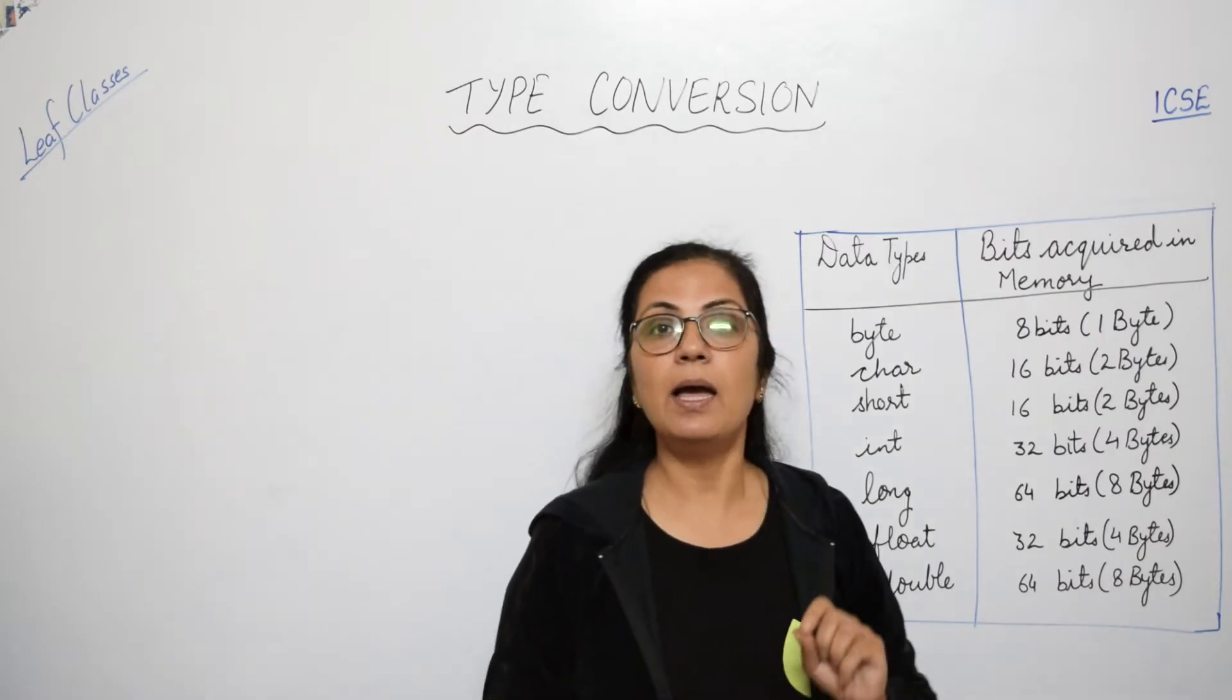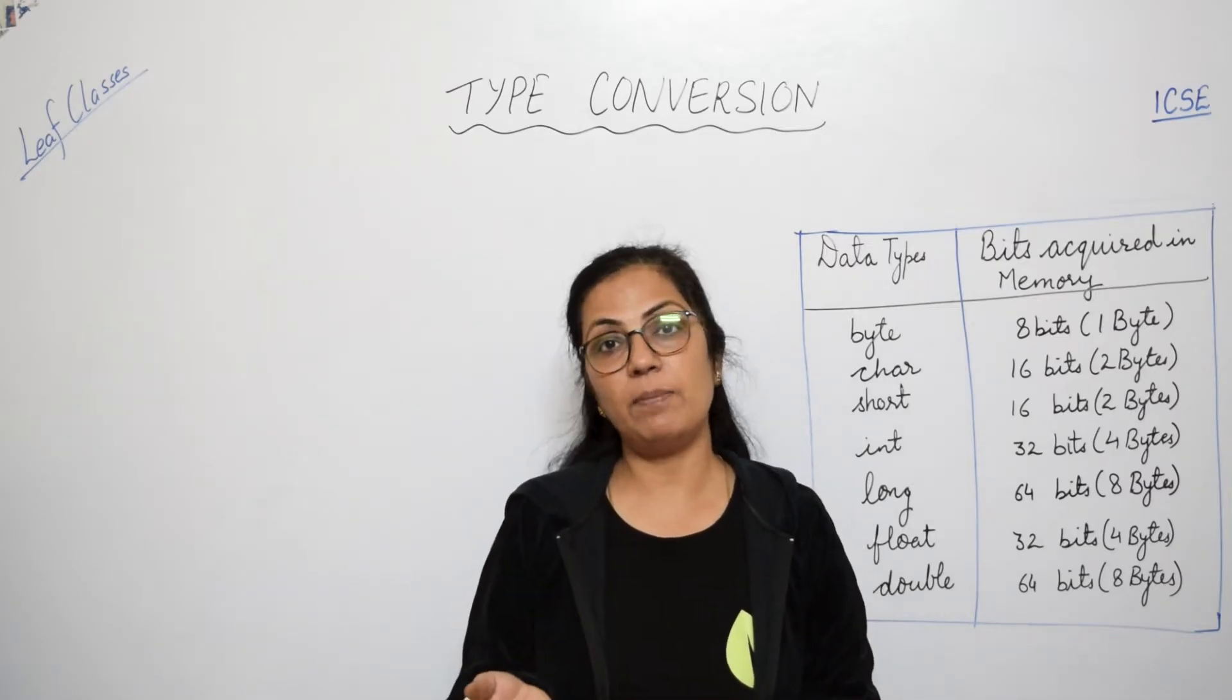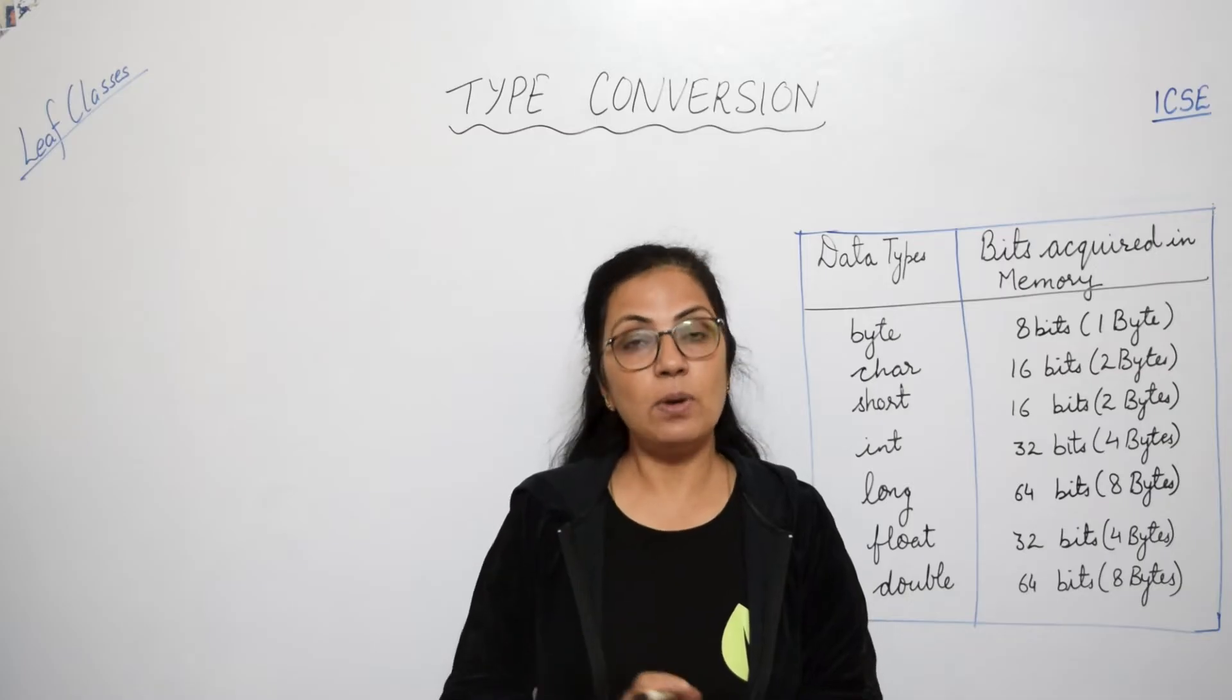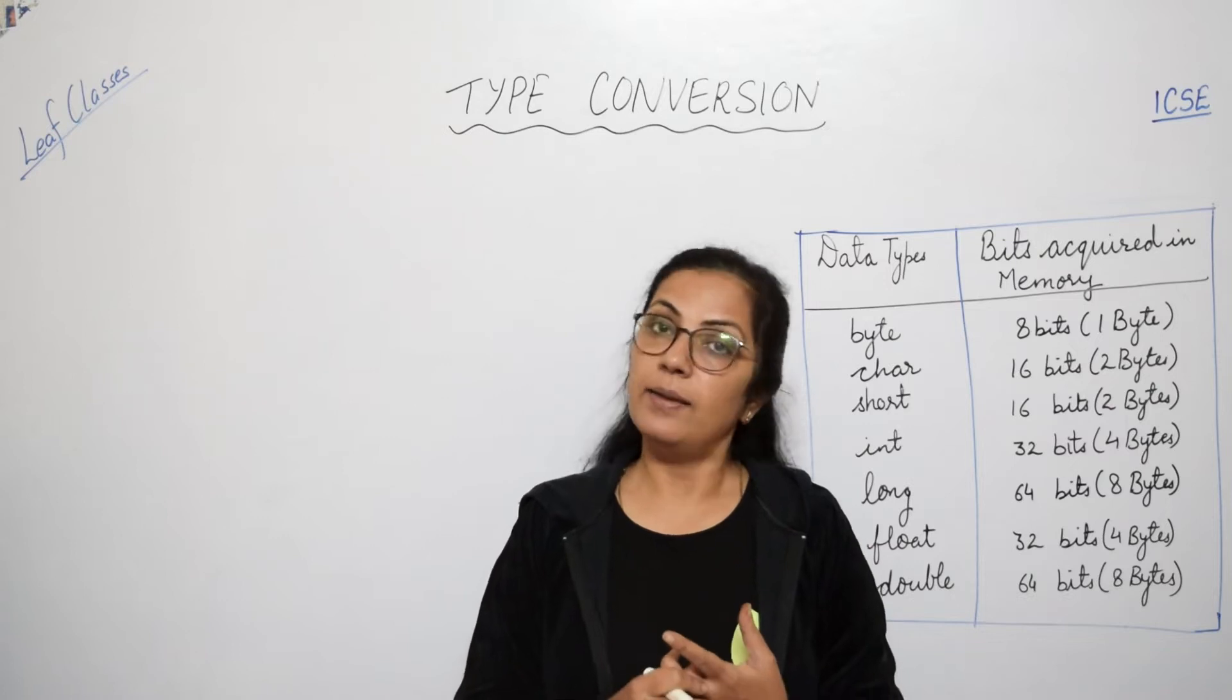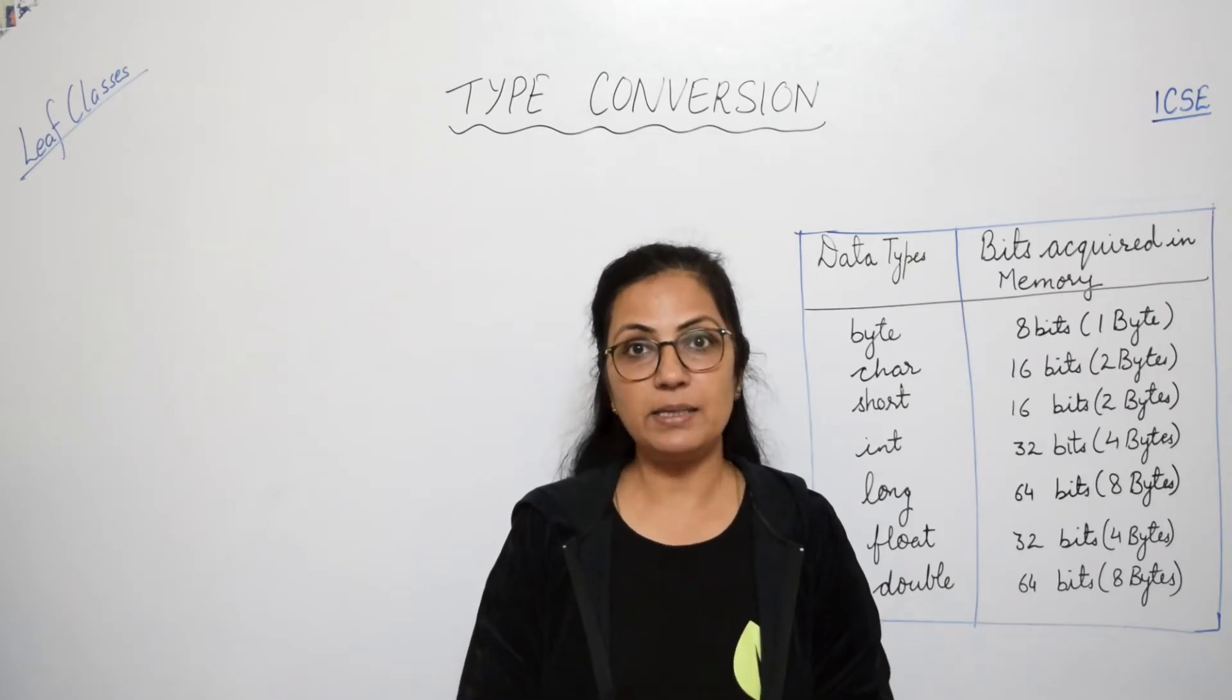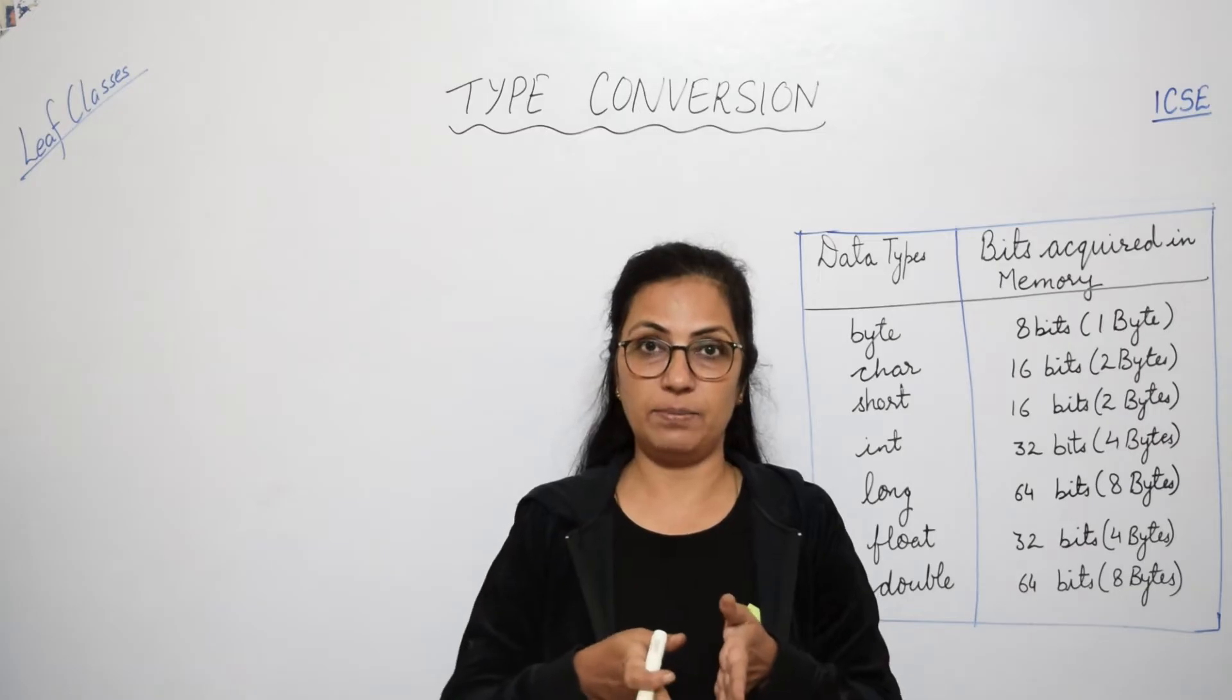Now coming back to the topic. In Java we use different data types. Children, when we assign a value of one data type to a variable of another data type, then sometimes it is converted, sometimes it is not converted and it gives you an error. So when these two data types are compatible with each other, then there is no error and one data type can be stored in other data type. But when they are not compatible, then we need to convert them. But conversion is done in both whether they are compatible or not compatible.